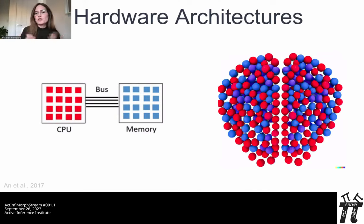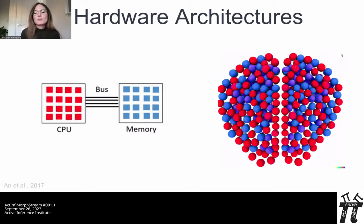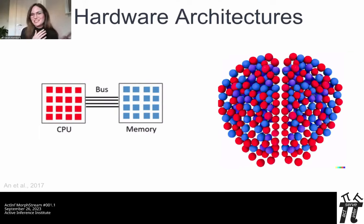Chips like this might be created with components like memristors, which can emulate synaptic weights. This architecture improves speed, reduces energy consumption, and enables massively parallel processing, meaning multiple problems can be worked on at the same time. This is particularly important as we reach the end of Moore's law, and because humanity needs to massively reduce its energy consumption against the backdrop of creating ever more powerful AI.